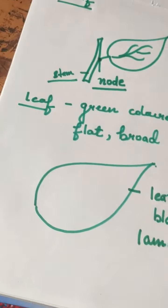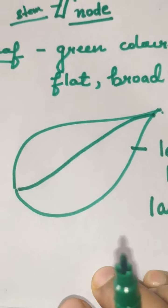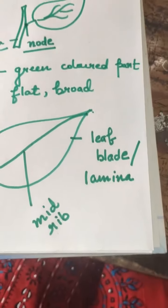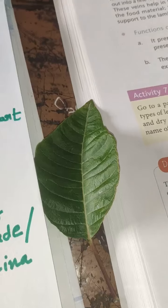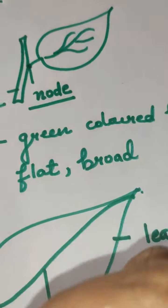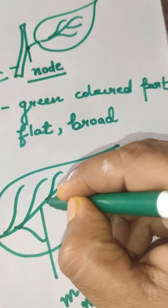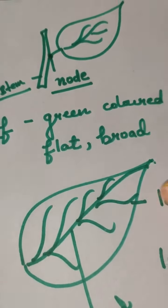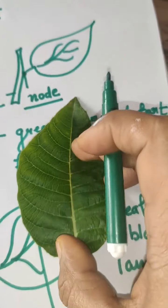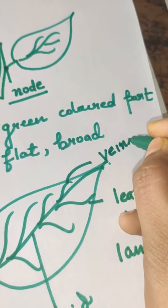Now if you notice a leaf, the leaf has a central line, and this central line is known as the midrib. You can see the central line — this is your midrib. The leaf has a strong central line known as midrib, which is branched into many lateral and fine small vein-like structures. These lateral branched lines coming out from the central line are known as veins.